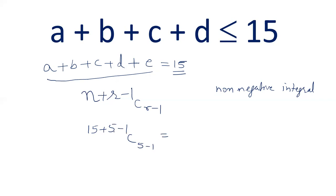So this gives me 15 plus 5, 20 minus 1 is 19, and 5 minus 1 is 4. We got a direct value 19 c 4, which we can solve and get the value as 19, 18, 17, 16, and we can divide by 4 factorial, which is 1, 2, 3, 4. And now let's calculate this.